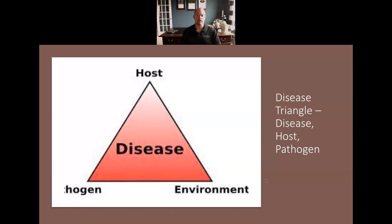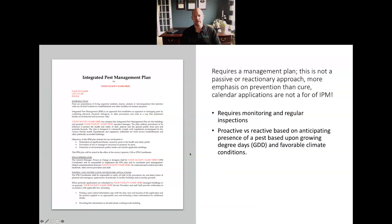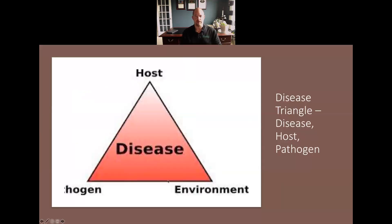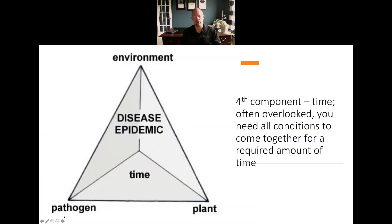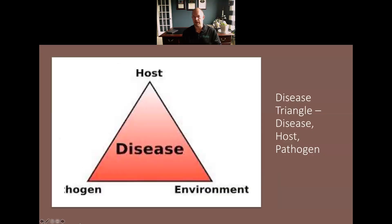When we look at diseases specifically, there's something called the disease triangle. Historically, models look at three components: the pathogen, the host, and the environment. When the pathogen, the host, and the environment all align under the right circumstances, we can get the onset of disease. If we do a preventative fungicide application, we're basically circumventing this whole process, so we don't really know whether we were going to see an outbreak or not.